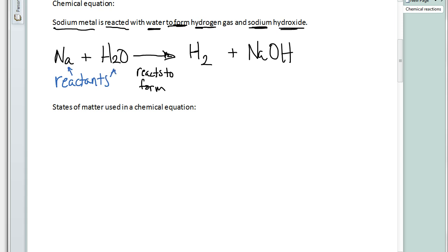On this side, we have the products. We have hydrogen and we have sodium hydroxide. These are some basic parts of a chemical reaction. Reactants on the left, products are on the right.